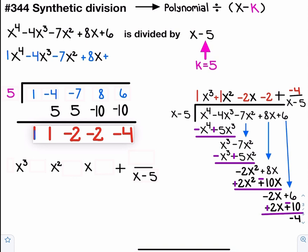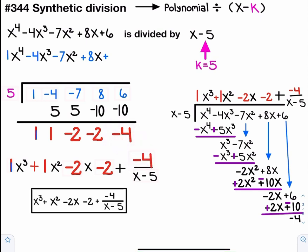And those red numbers, those are the coefficients on each term. So I have one x to the third, positive one, so plus one x squared, minus two x, minus two, and the last number is the remainder, so minus four, plus negative four over x minus five.